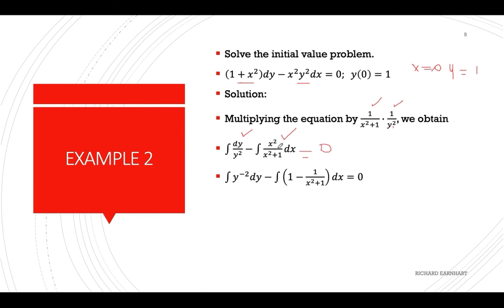Writing dy over y squared as y raised to negative 2 dy, and dividing x squared by (x squared plus 1) gives 1 minus 1 over (x squared plus 1) since they are the same degree. Integrating: y raised to negative 2 plus 1 over negative 2 plus 1 gives negative 1 over y. The integral of negative 1 is negative x, and the integral of 1 over (x squared plus 1) is arctan of x, plus the arbitrary constant.